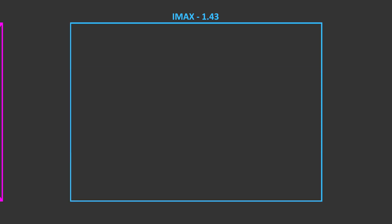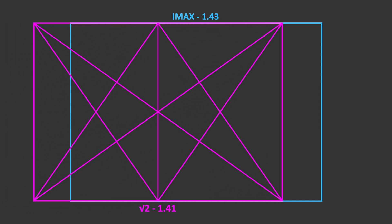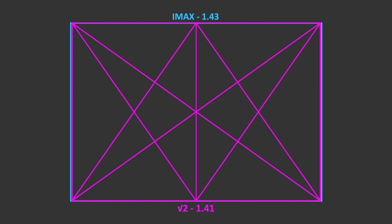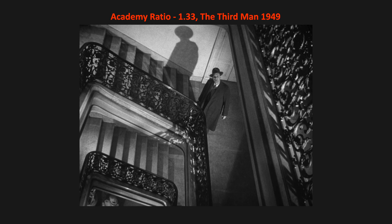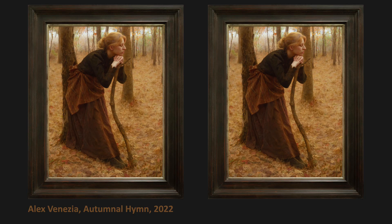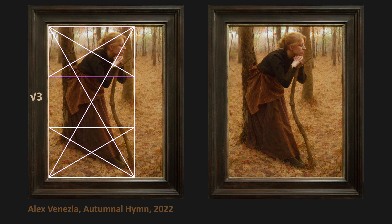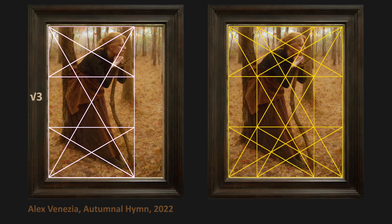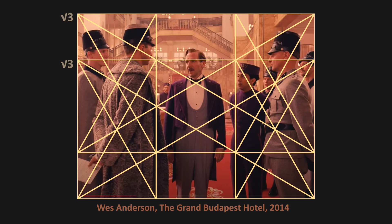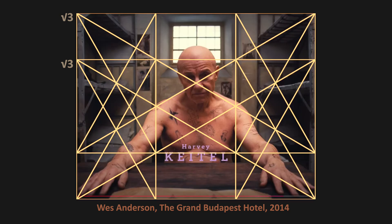And then there's IMAX at 1.43 — insanely close to a root 2 at 1.41. Also on the short side, early cinema and television at 1 to 1.33. This is a contemporary example, but that's a real old-school cubist and impressionist era ratio that's getting into compound grid territory — in this case overlapping threes. It's interesting how what's so old becomes new again over time.